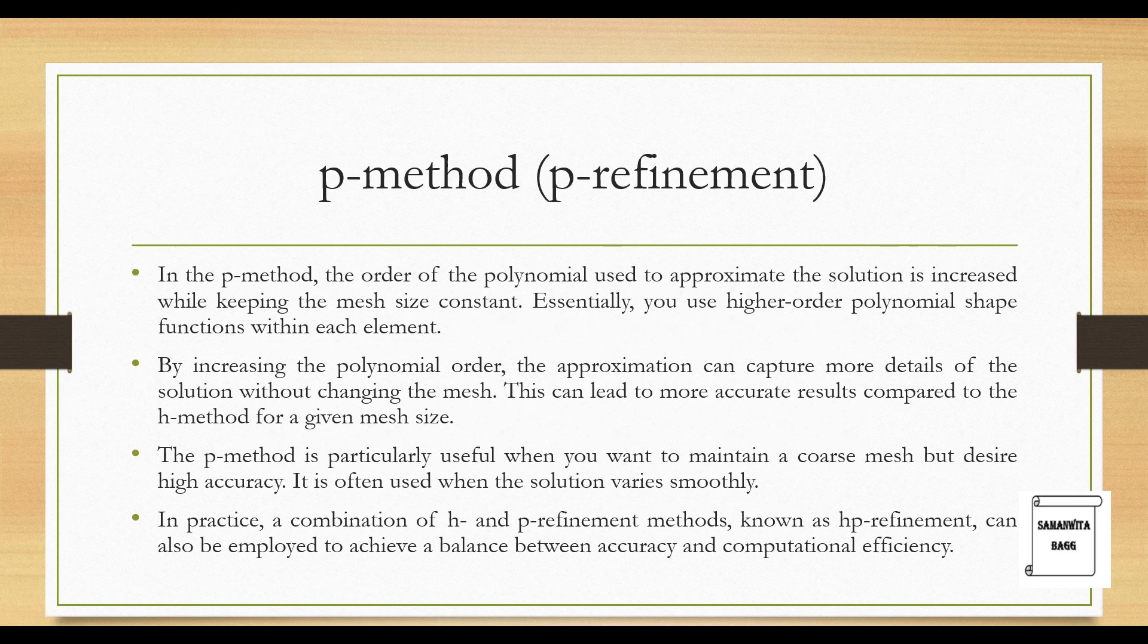This is something which requires more computational speed so that you go closer to the exact solution. Next we will talk about the P method, also called p-refinement. In the P method, the order of the polynomial used to approximate the solution is increased while keeping the mesh size constant.